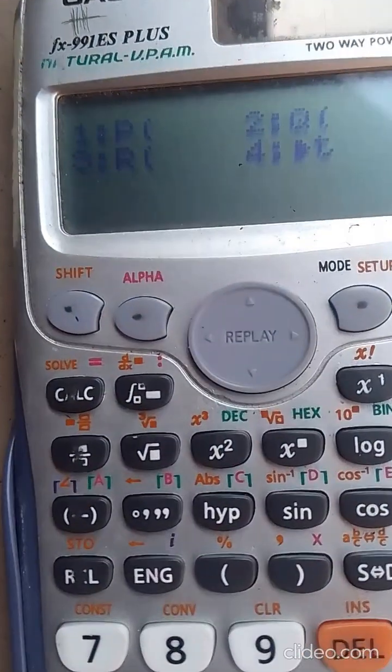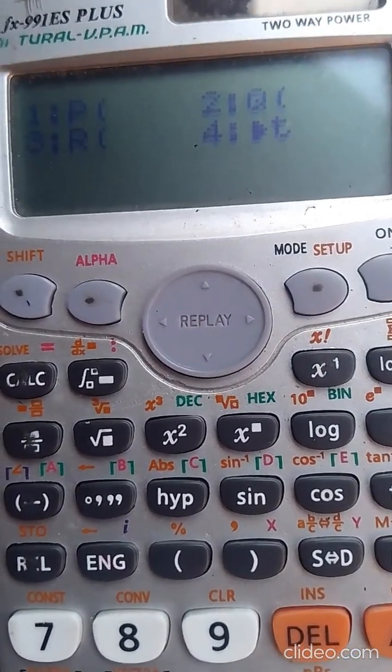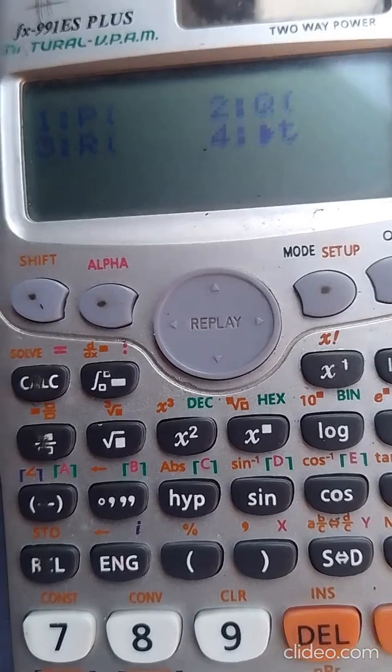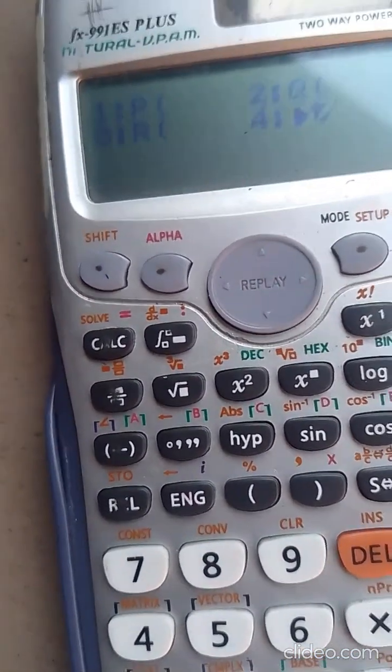Once I press that 5, it's asking me which one did I want to perform. Is it p-value? Is it q? Is it r? Now I want to use p, so press 1.